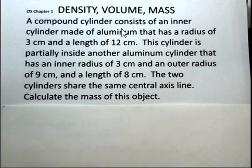We have a compound cylinder. We have an inner cylinder made of aluminum with a radius of 3 centimeters and a length of 12 centimeters. This cylinder is partially surrounded by another, also aluminum.